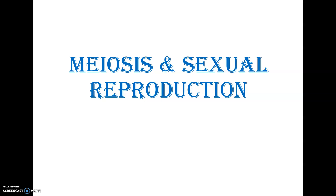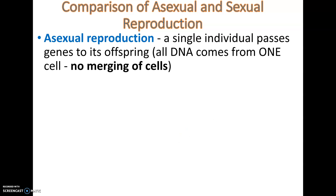Now that we've talked about asexual reproduction and mitosis, we're going to move into a different type of reproduction called meiosis. First, let's do a quick comparison. Asexual reproduction is when a single individual passes their genes to an offspring — all the DNA coming from a single parent, with no shuffling of chromosomes and no cells fusing together, just an exact copy getting passed on.